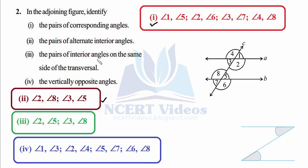Third, the pairs of interior angles on the same side of the transversal: the left side and the right side. The interior angles on the same side are two and five, and three and eight. By the property learned in this chapter, they are supplementary — adding up to 180°. So two plus five equals 180°, and three plus eight equals 180°.